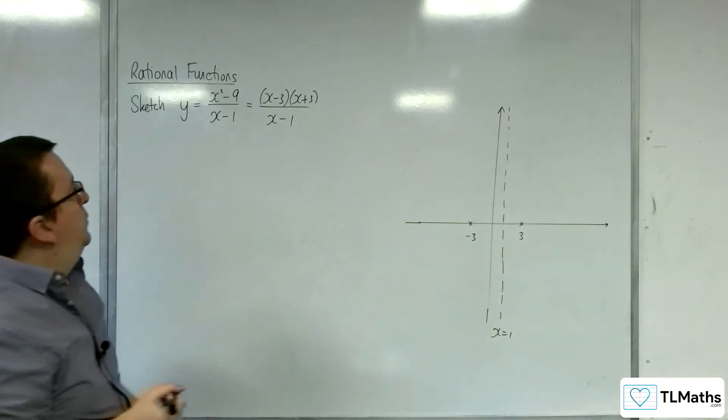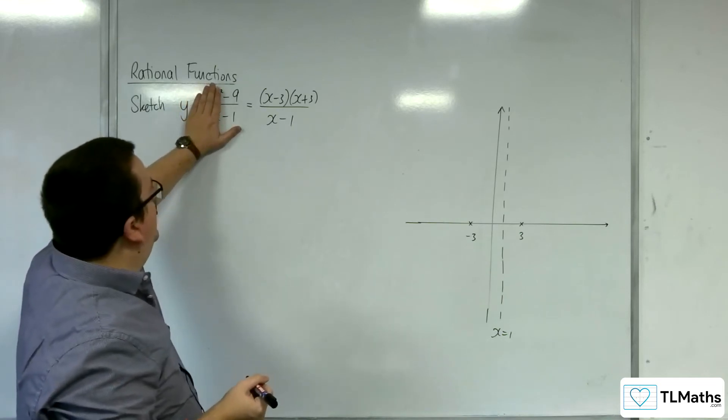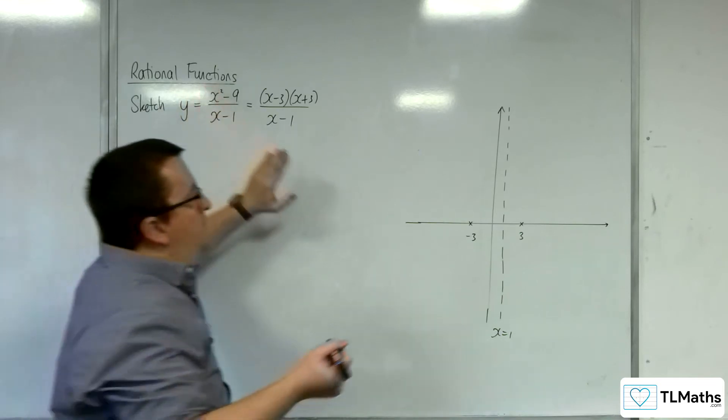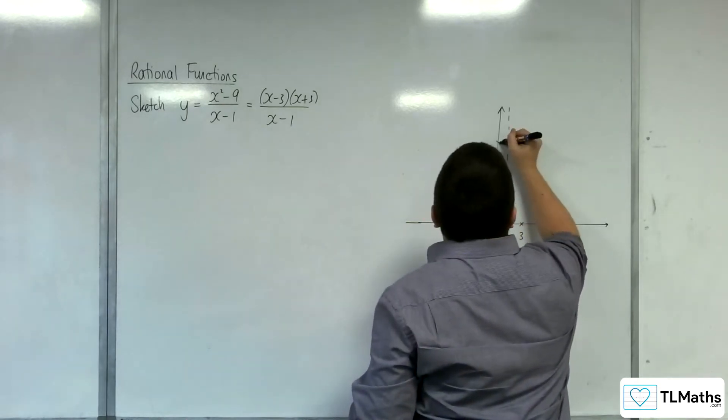Now how about where it crosses the y-axis? That's when x is 0, so we get minus 9 over minus 1, which is positive 9. So sum up here.